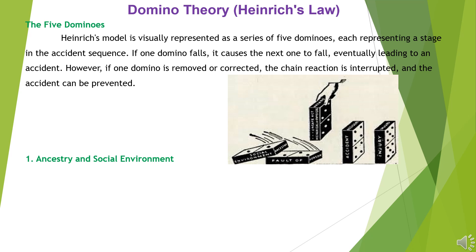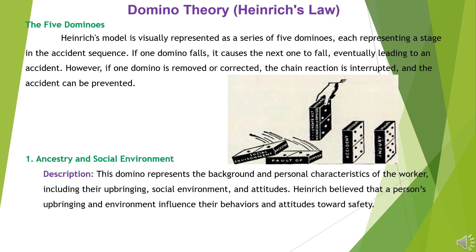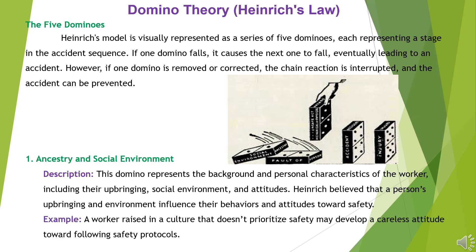Domino 1 — Ancestry and Social Environment: This domino represents the background and personal characteristics of the worker, including their upbringing, social environment, and attitudes. Heinrich believed that a person's upbringing and environment influence their behaviors and attitudes toward safety. Example: A worker raised in a culture that doesn't prioritize safety may develop a careless attitude toward following safety protocols.